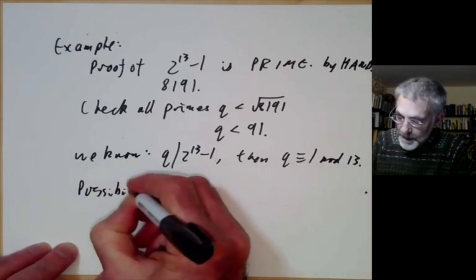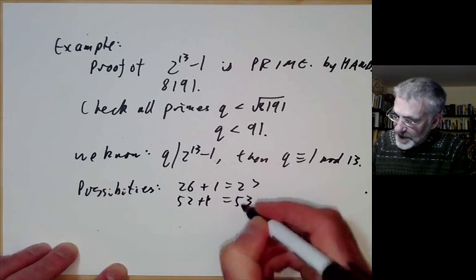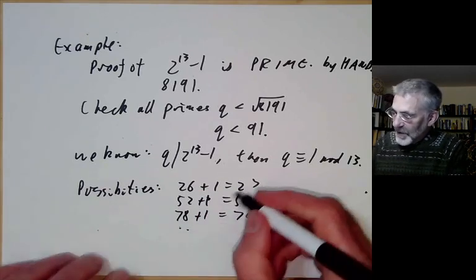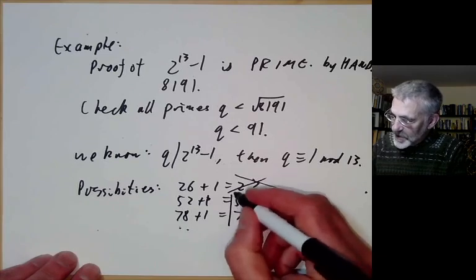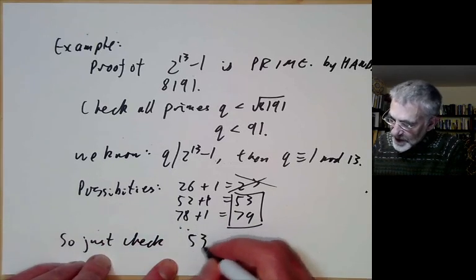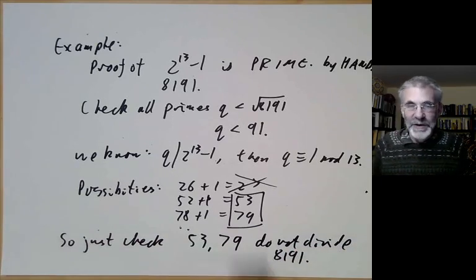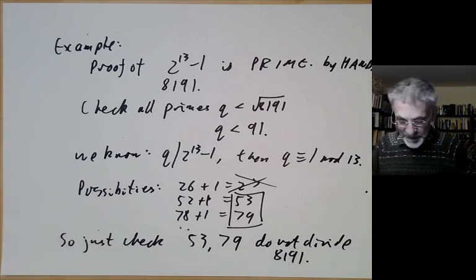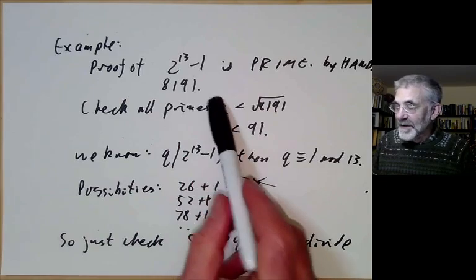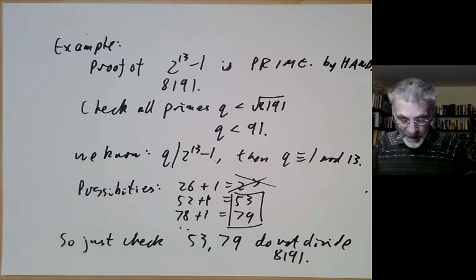So the possibilities are 26+1=27, 52+1=53, 78+1=79, and then the next one is bigger than 100. We don't need to check 27 because it's not prime. So there are only two numbers to check. All we have to do is check that 53 and 79 do not divide 8191 — a straightforward piece of long division. Using Fermat's theorem has reduced the effort by a factor of 10: instead of checking 20 or so primes, we're reduced to checking just two.